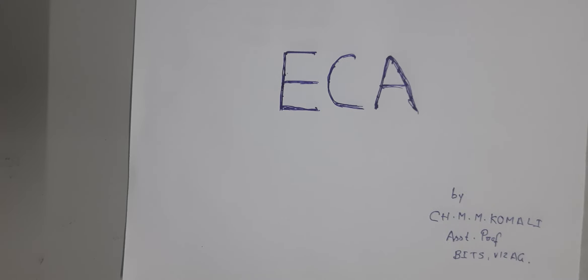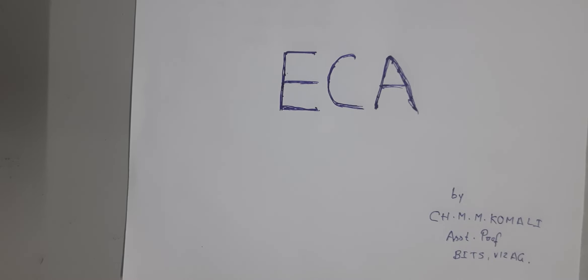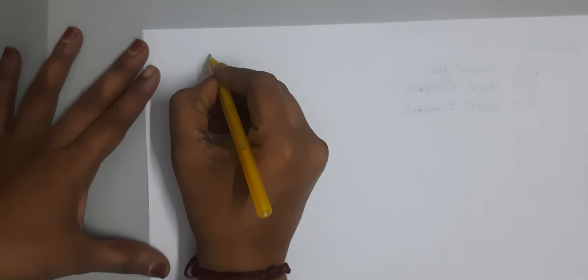Good morning students. In this class we are discussing about the four different topologies of the feedback amplifiers. The different categories are: voltage series feedback amplifiers, voltage shunt feedback amplifiers, current series feedback amplifiers, and current shunt feedback amplifier. First we will learn the block diagrams of the four different topologies, starting with the basic feedback amplifier.